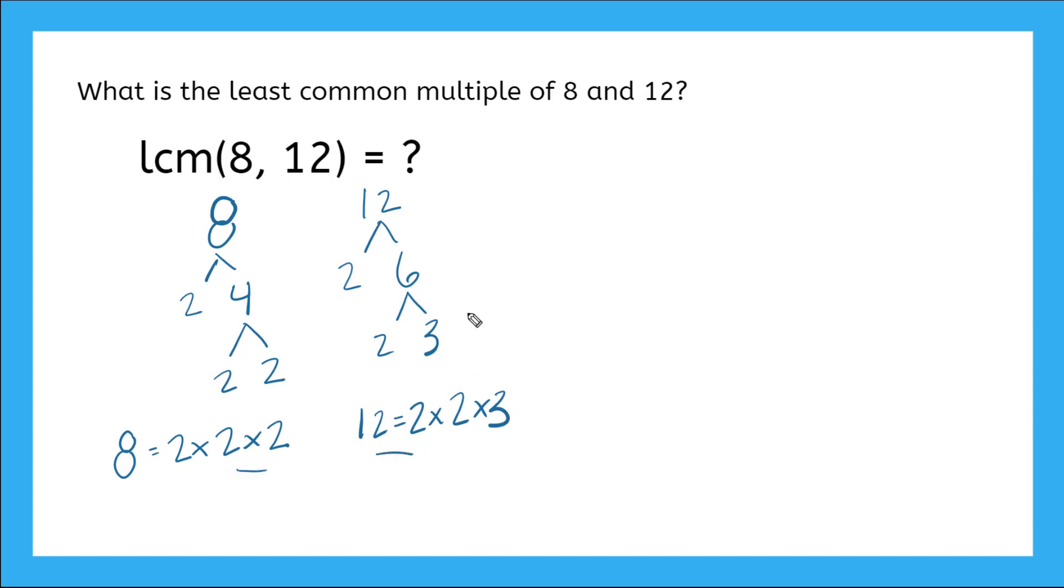So now I'm going to use these factors of 8 and 12. The LCM of 8 and 12 has to be a multiple that has at least 8, and I know that 8 is made up of 2 times 2 times 2. So here's 8, but I also need to be representing my 12, and 12 is made up of 2 and 2, which I have right here, but I'm missing this 3 right here. So I'm going to go ahead and add that there.